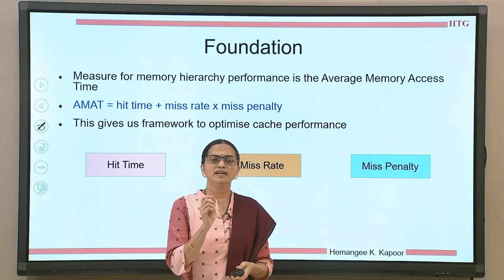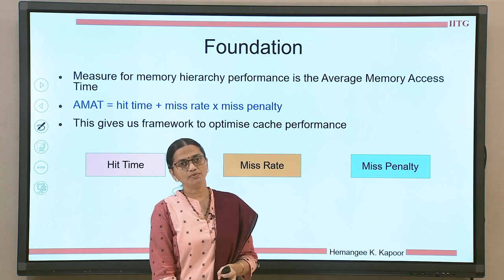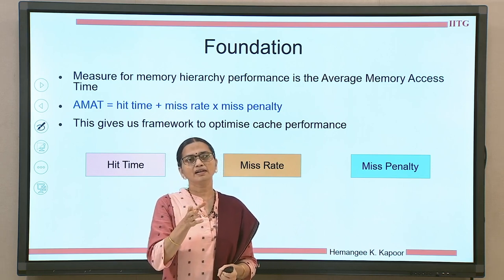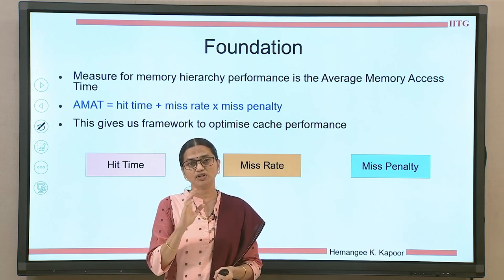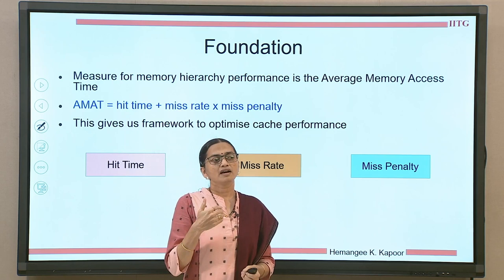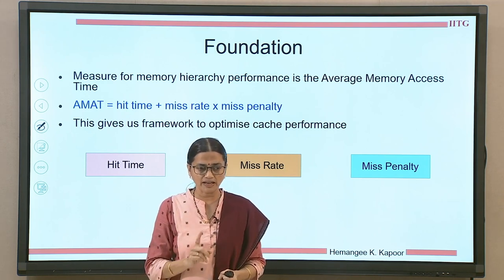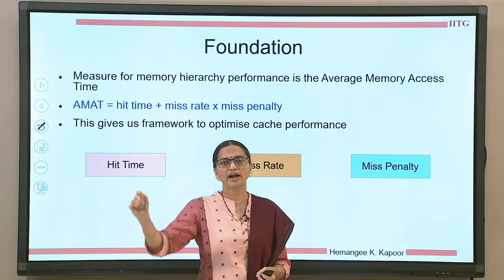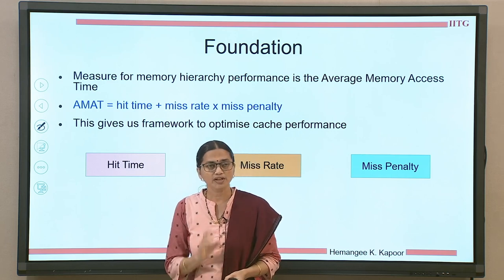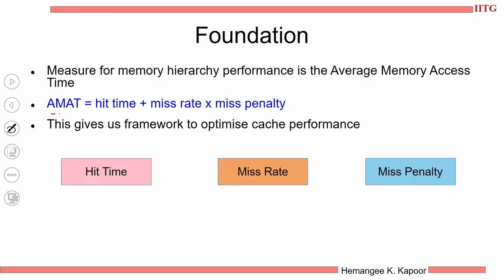AMAT is defined by the given formula on the screen. It is the hit time — whenever we find the data in the cache, the time to go to the cache and find out if it is there is called the hit time. And if you do not find the data, we go to the next level. In case of misses, we use the miss rate followed by the miss penalty. So AMAT is hit time plus miss rate times miss penalty — that is the formula for average memory access time.